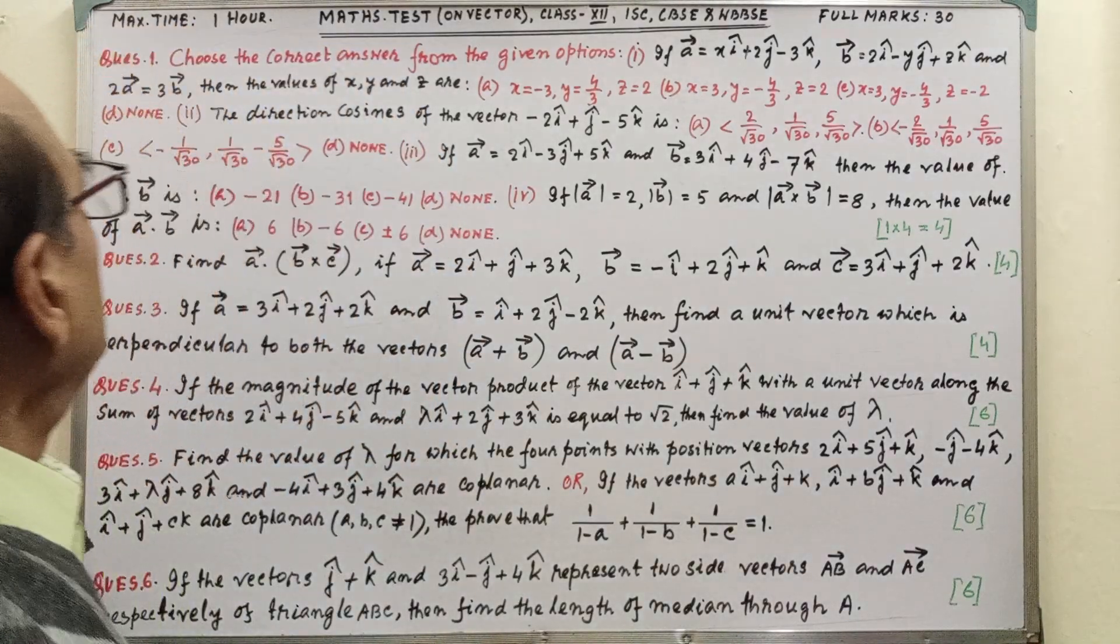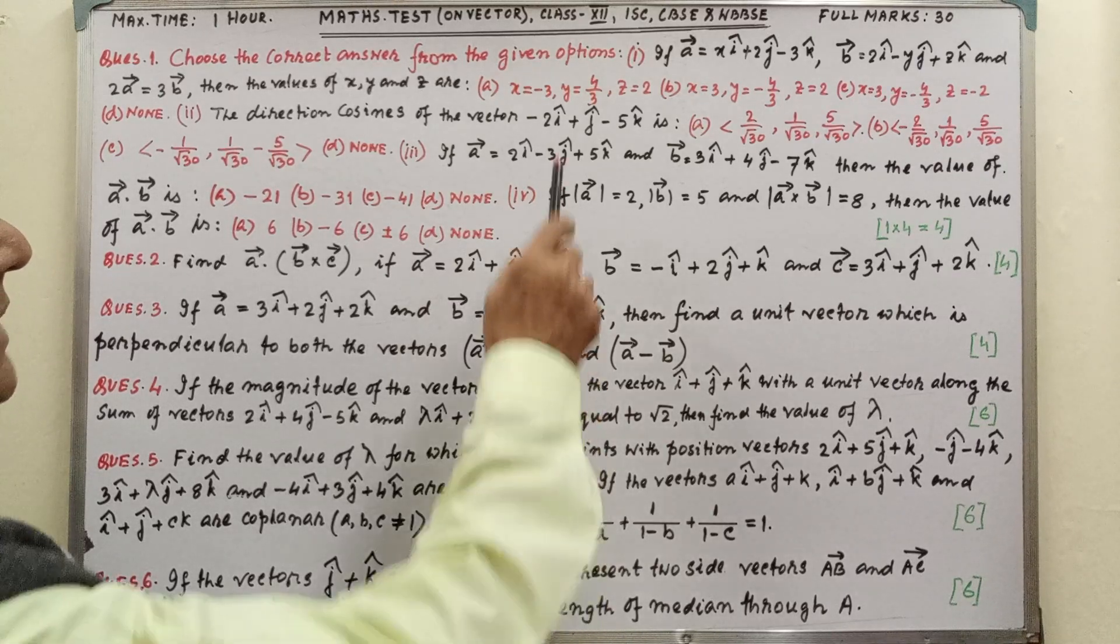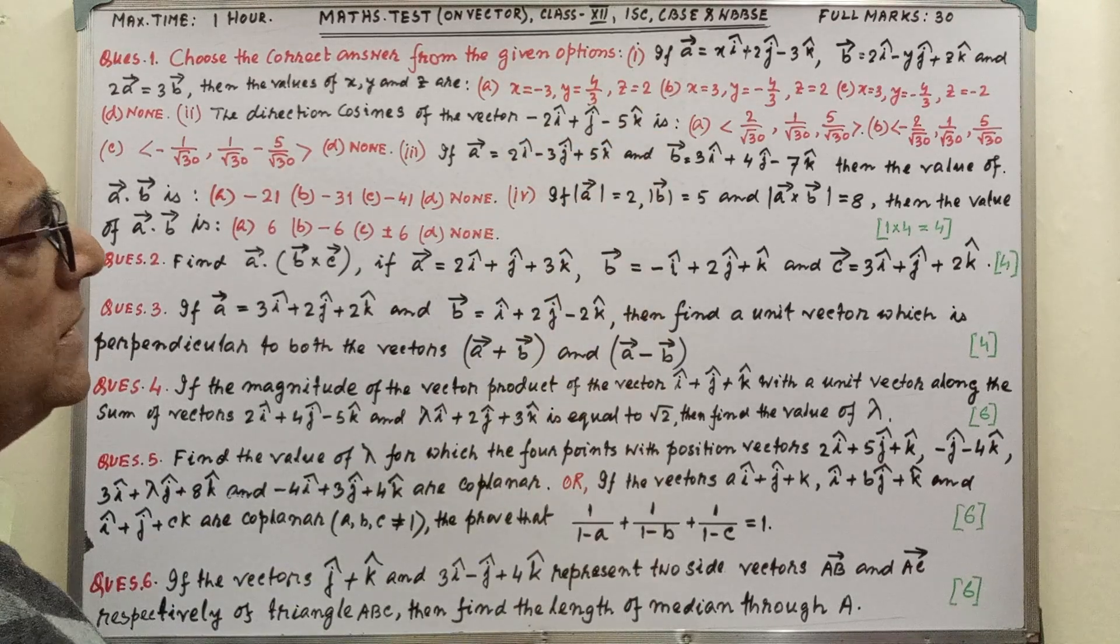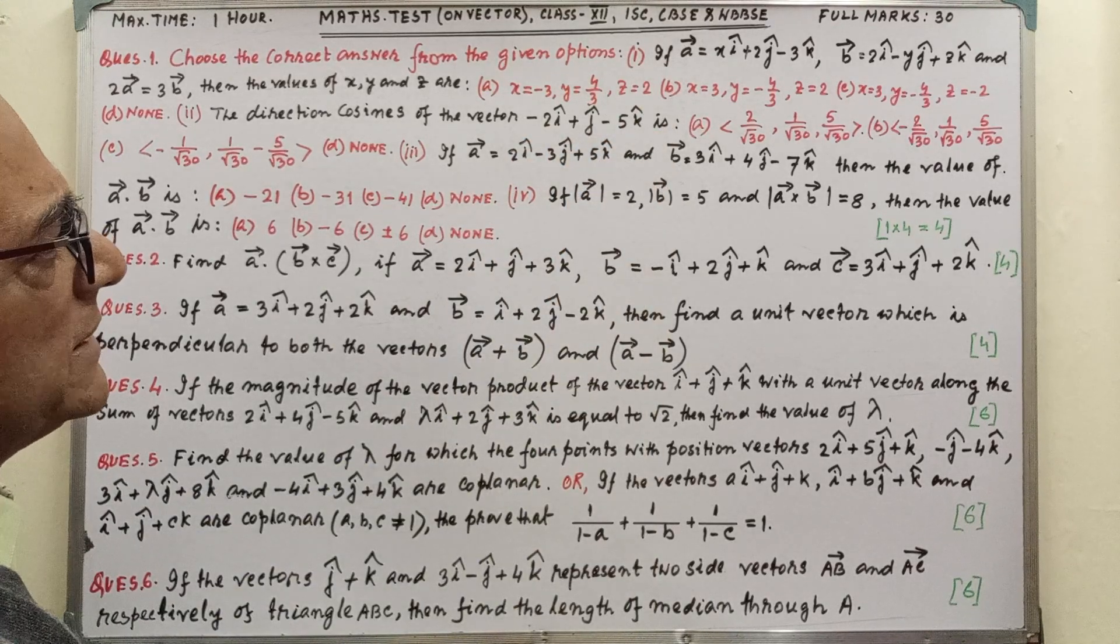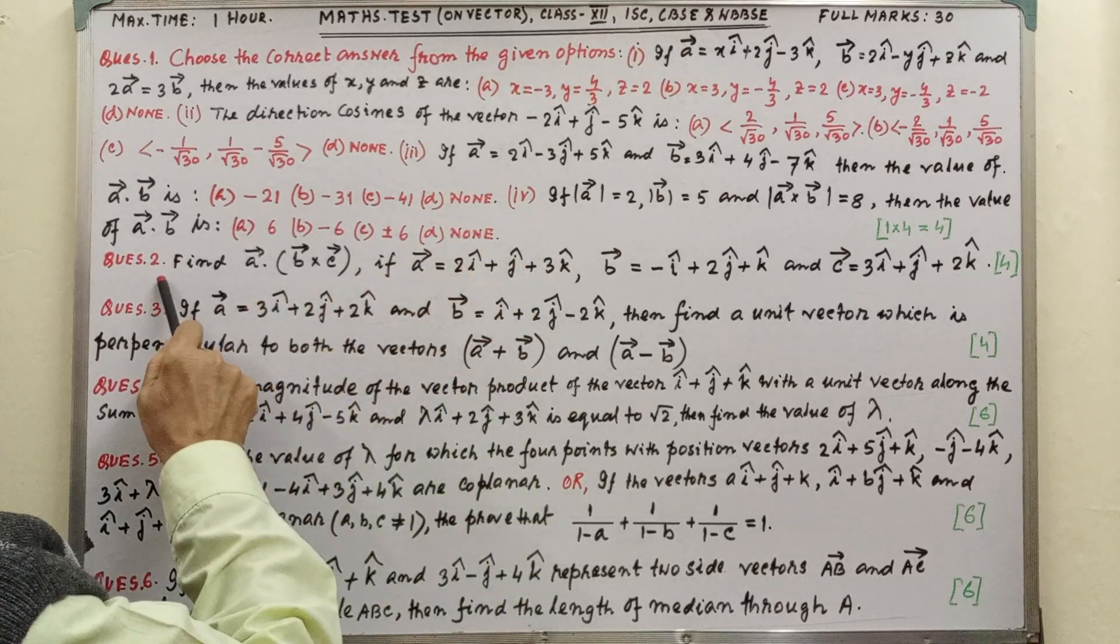Question number one: choose the correct answer from the given options. There are four MCQ statements with options given. Follow attentively and place your tick marks in the proper location.